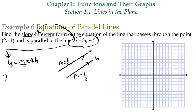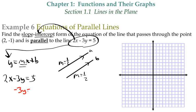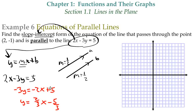So let's take 2x - 3y = 5 and solve for y. We're going to subtract 2x from both sides, so we get -3y = -2x + 5. Then divide by -3, so we get y = (2/3)x - 5/3.